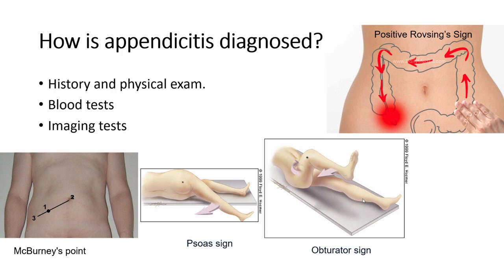Another sign: with the patient's knee flexed, we turn the knee internally — the patient will feel pain if appendicitis is present. The most common form is the pelvic form. Additionally, there is the crossing sign: when we deeply palpate the left lower quadrant and rapidly release the hand, the patient feels pain in the right lower quadrant. This is a sign of appendicitis.